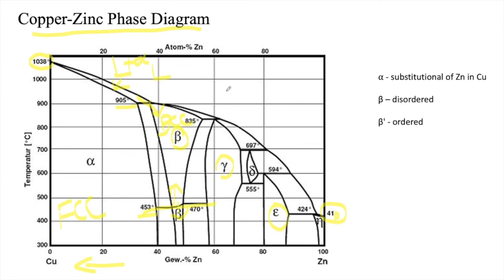The alpha is around 37.5%. From 905 degrees Celsius to 403 degrees Celsius, solubility of zinc in copper increases with decreasing temperature.